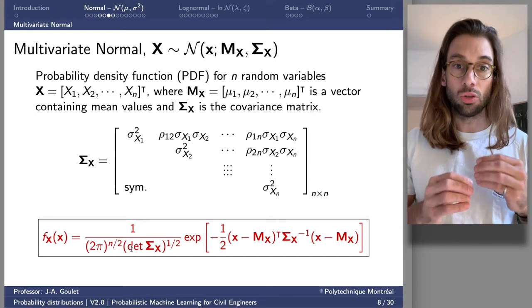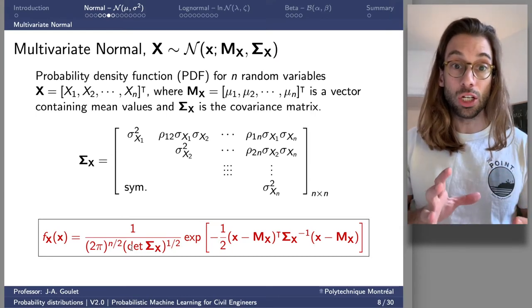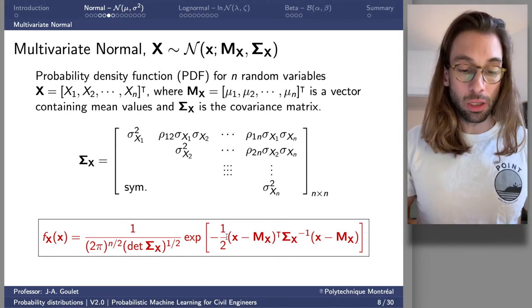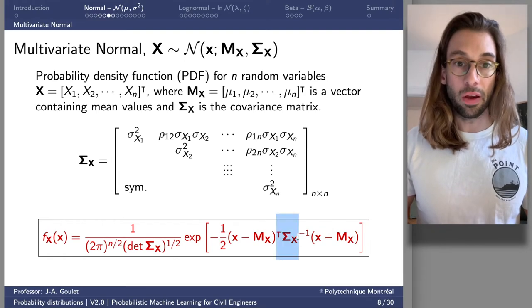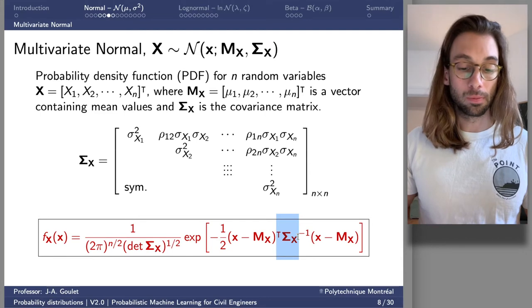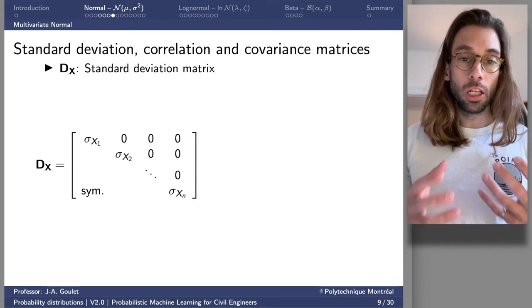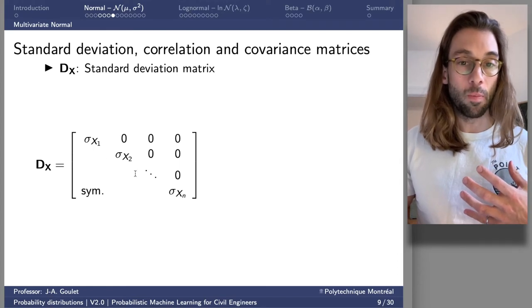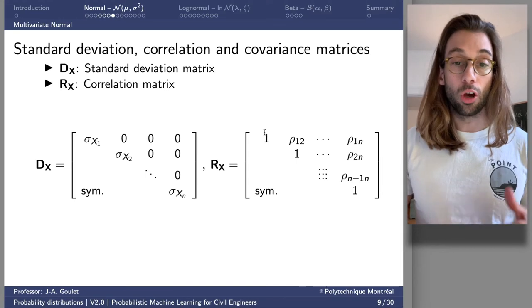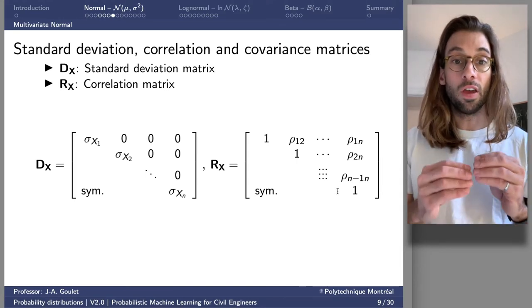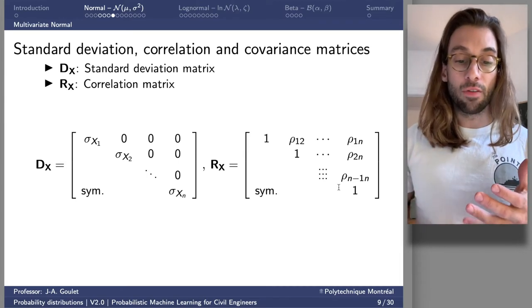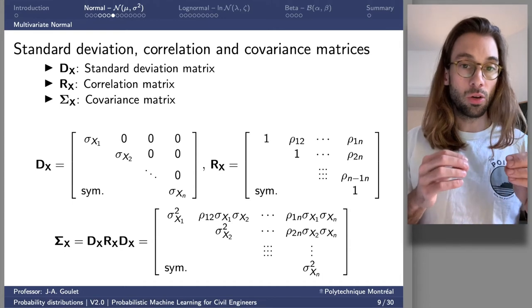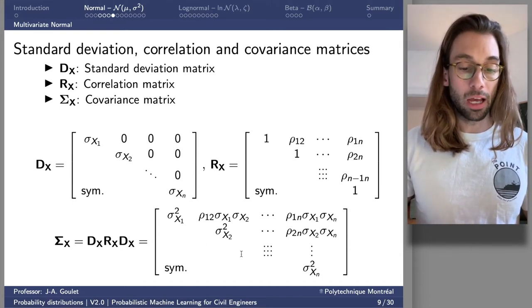The covariance matrix can be built from the standard deviation matrix — a square matrix with standard deviations on the diagonal — and the correlation matrix, which has ones on the diagonal and pairwise correlation coefficients off-diagonal. Multiplying D_X times R_X times D_X gives the covariance matrix. Inside the exponential of the multivariate normal is a quadratic form, and the covariance matrix expands or contracts the space.